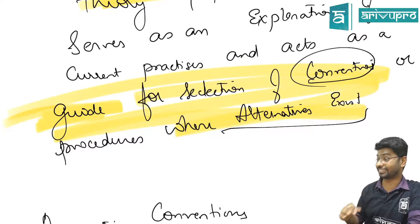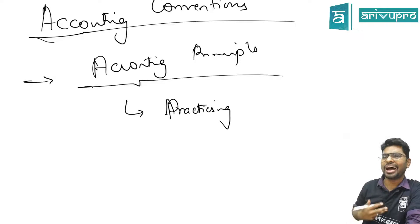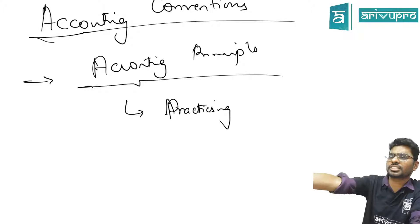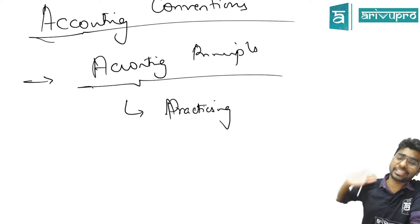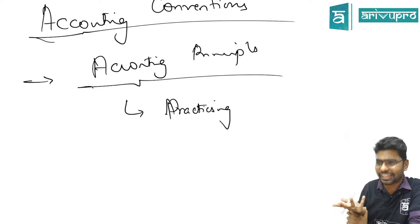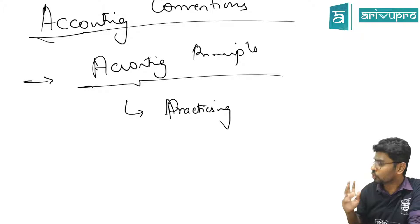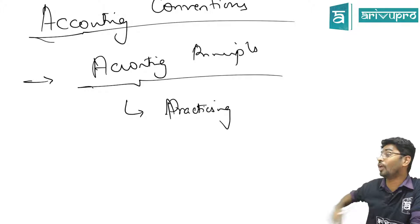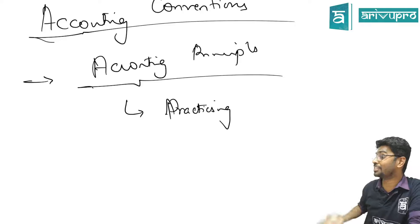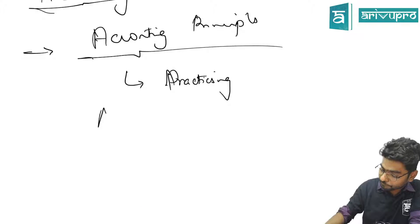From accounting principles, I choose certain things and start practicing them. Accounting principles say wherever alternatives exist it will act as a guide — it has different rules and regulations, but you won't follow all of them. Just like a student who studies at night instead of morning says, 'as long as I meet my objectives, who cares?' You choose what is more convenient for you, and when you adopt it, that becomes your convention.